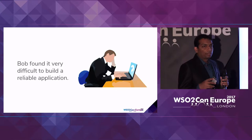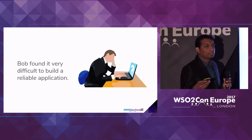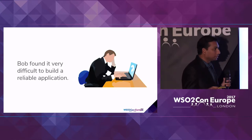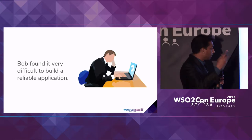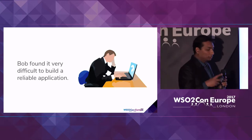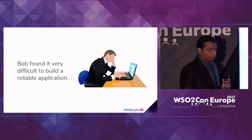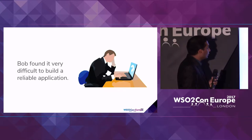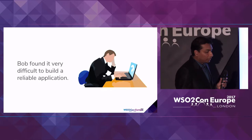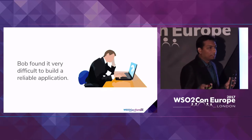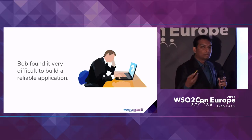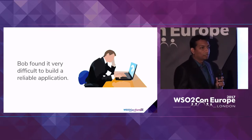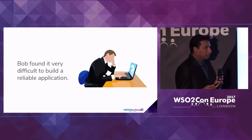Even though there are failures happening at the service level in these legacy services, we can't expose those errors directly back to the client — we need to handle that gracefully. Bob tried to fix those errors in these legacy services, but unfortunately he couldn't, because those services were built a long time ago and nobody knows how to fix them. So he was in trouble.